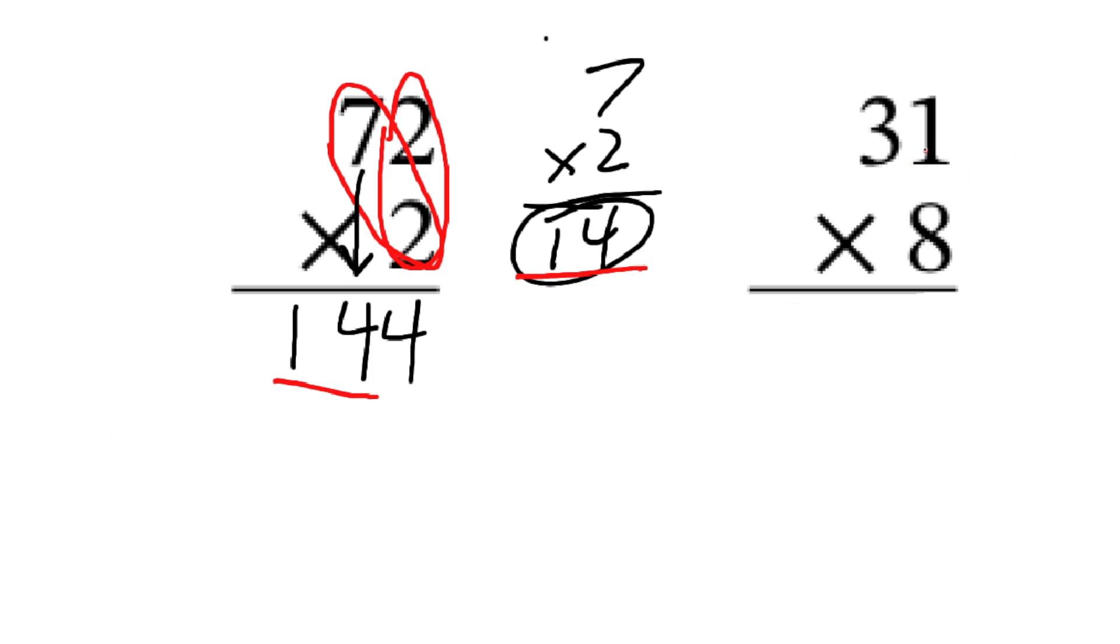31 times eight. What I'm doing here is first off, I'm going to do eight times one. When I do eight times one, I'm going to have eight. Anytime any number times one is just going to be that number.